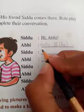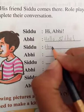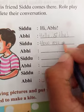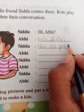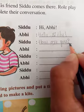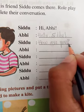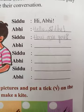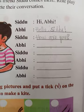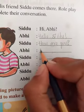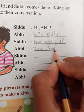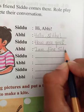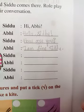Next, Sidhu asks 'How are you?' — that is a question, so we put a question mark at the end. Then Abhi answers: 'I am fine, Sidhu.'